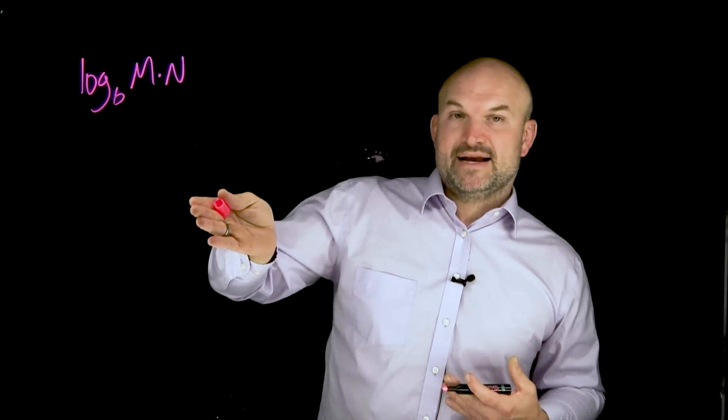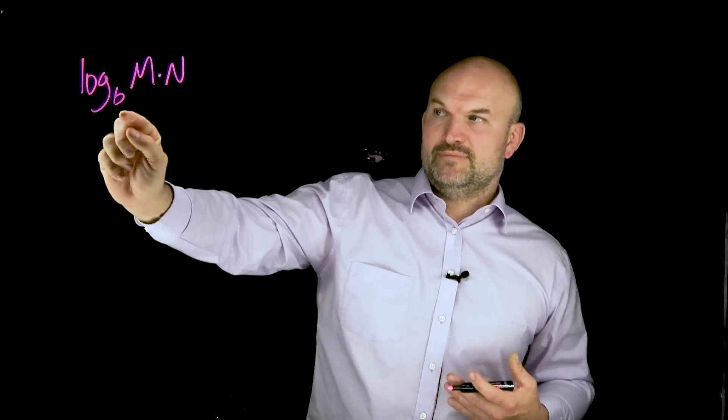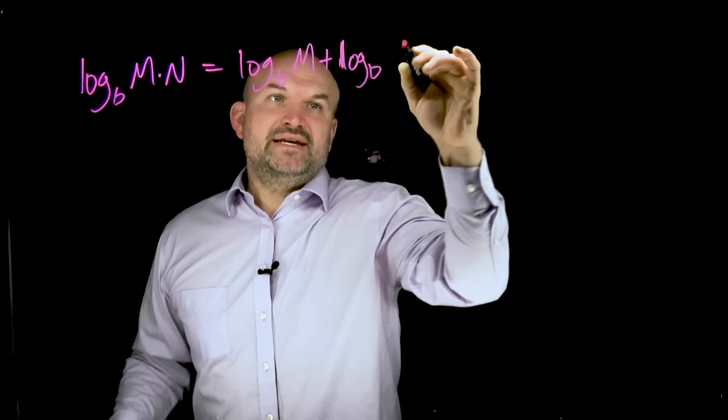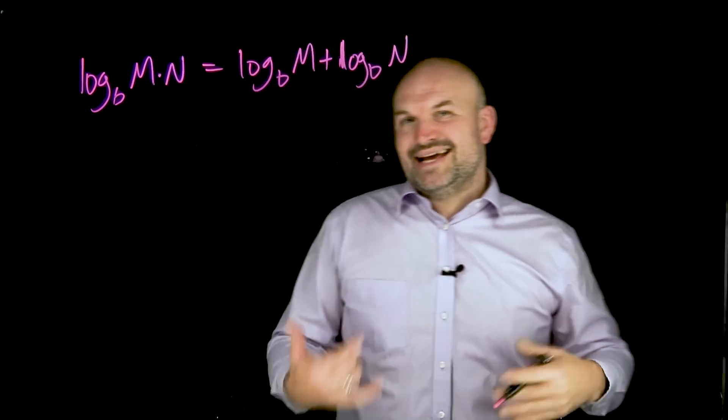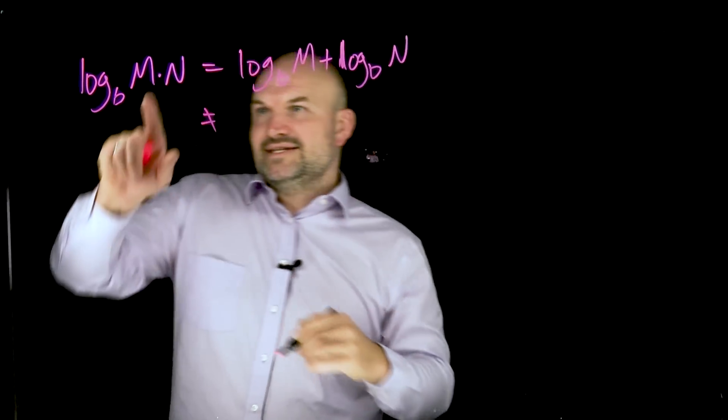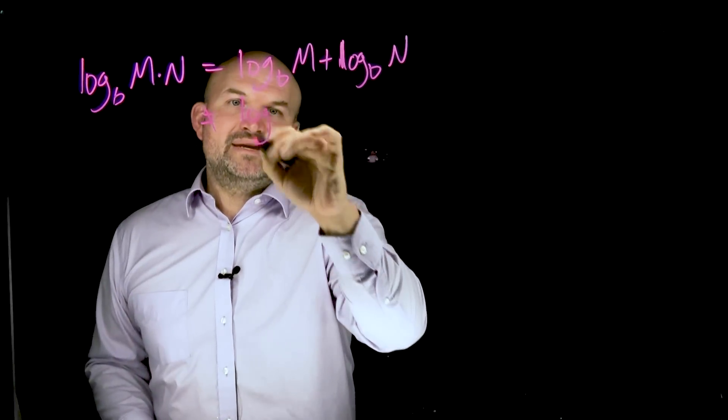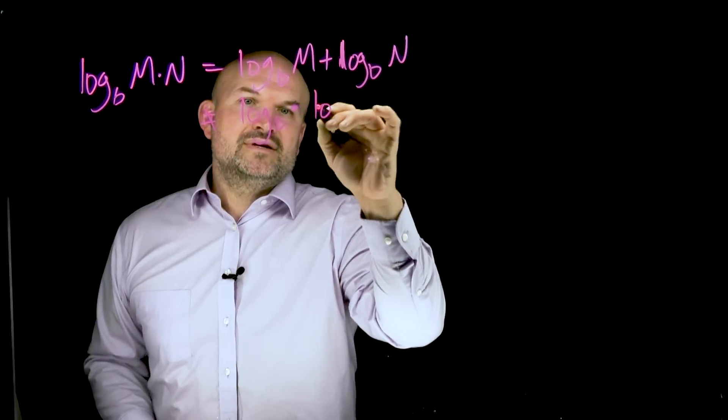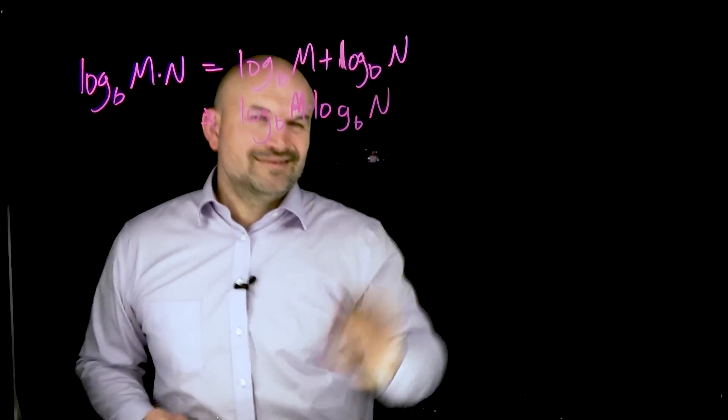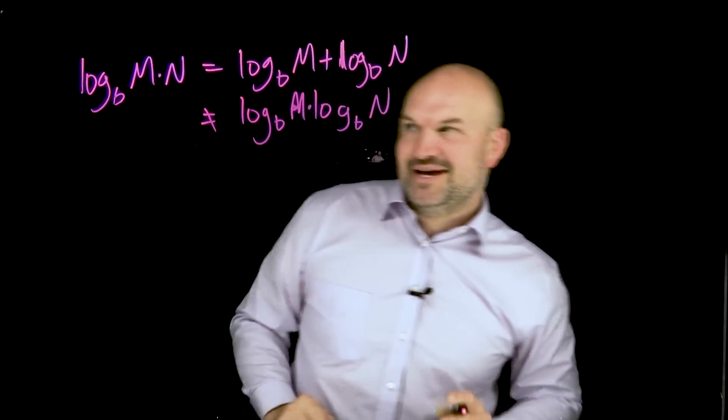This is what we call the product rule for expanding logarithms. If I have a logarithm of base B and I have a product inside that argument, I can rewrite that as two logarithms with log base B of M plus log base B of N. So I can rewrite that as the sum of two logarithms. Now, a common mistake that students will do is they see product and they say, oh, that means that's log base B times M times log base B times N. No, no, no. Notice I said don't do that.